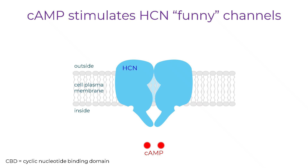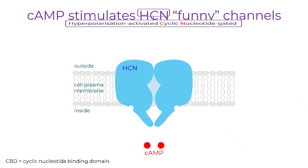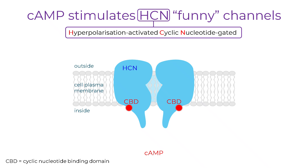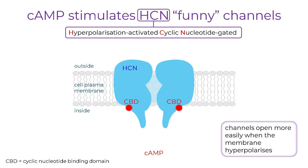One of the actions of cyclic AMP is to stimulate HCN cation channels, also called funny channels, because of their unusual properties. HCN stands for hyperpolarization activated, cyclic nucleotide gated. Each channel is formed from four subunits, and each subunit has a cyclic nucleotide binding domain on the cytoplasmic side of the membrane. When cyclic AMP binds to this domain, it causes a conformational change in the channel. HCN channels are opened by hyperpolarization, but cyclic AMP acts to facilitate this process — it makes the channels open more readily when the membrane hyperpolarizes.